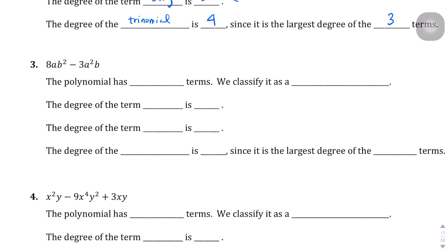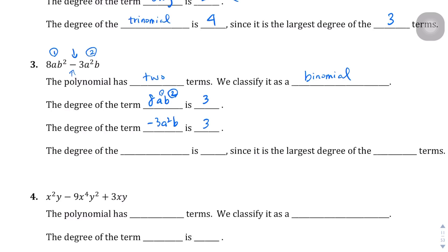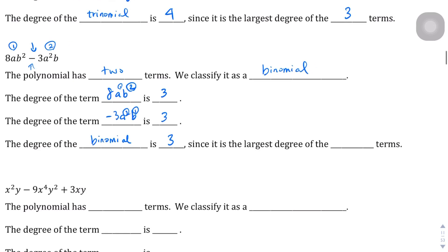Question three: the polynomial has two terms, separated by one subtraction sign, so we classify it as a binomial — just like a bicycle has two wheels. The first term, 8ab², has degree three since one plus two is three. The second term, negative 3a²b, also has degree three since two plus one is three. Therefore the degree of this binomial is three.